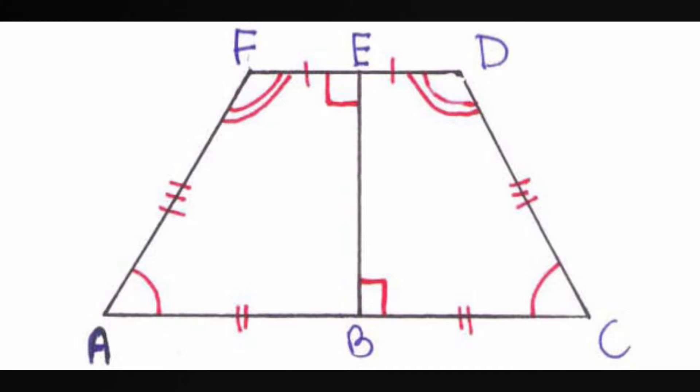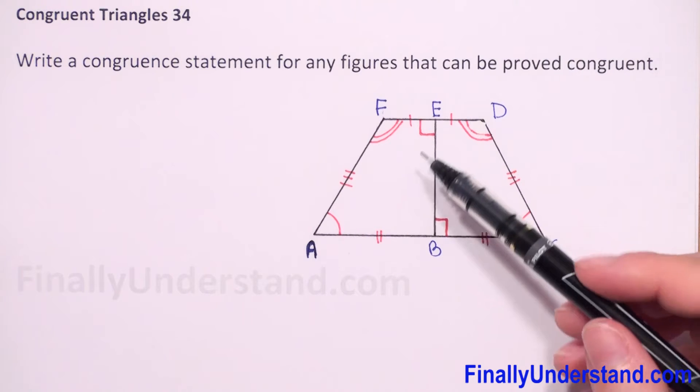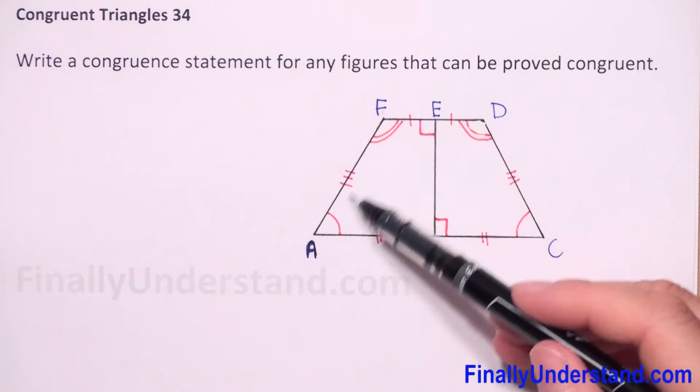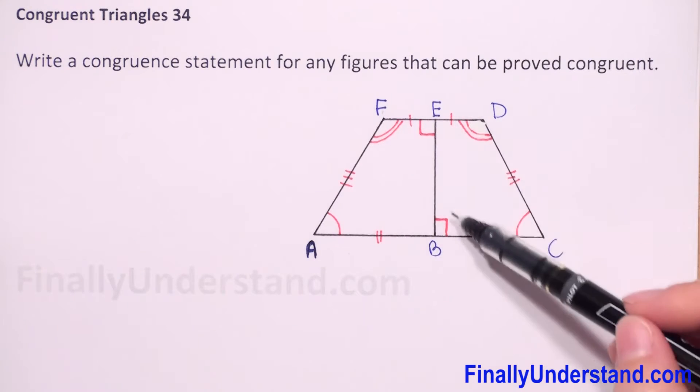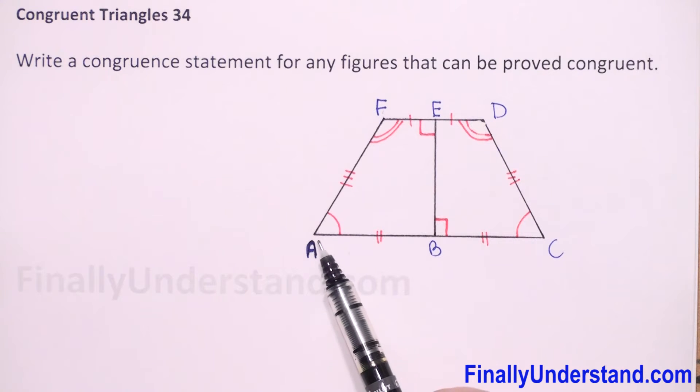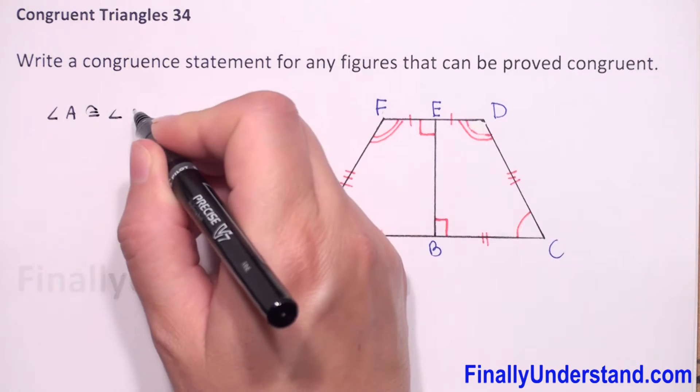We have to write a congruent statement for any figures that can be proved congruent. We have here a quadrilateral which is divided into two smaller quadrilaterals, and we have given that angle A is congruent to angle C.